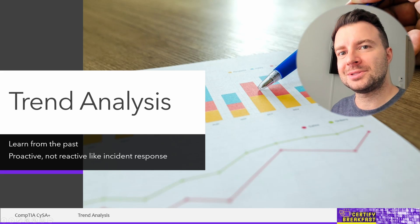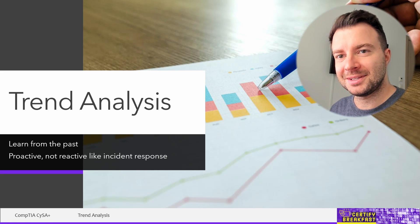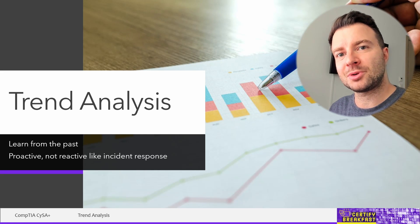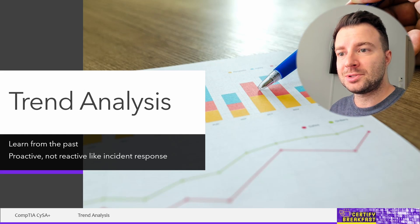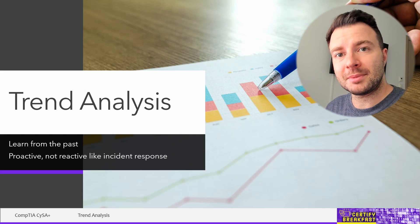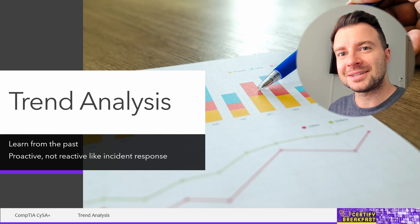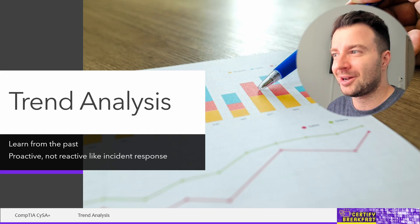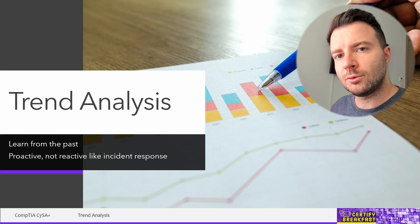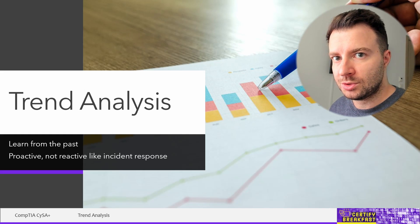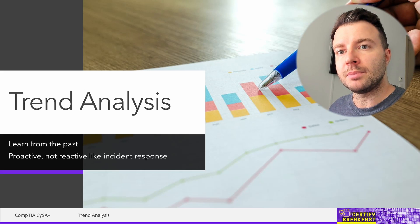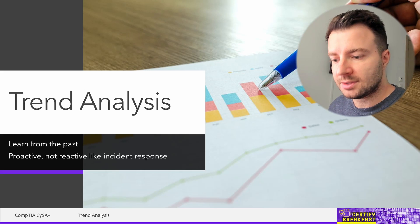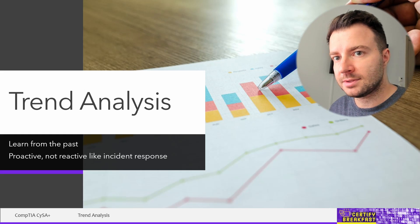Trend analysis is a way to look at the past, look at some information from the past, try to learn from it, and then try to infer, to deduce, to predict somehow the future. This is going to work much better with security and computer systems than it does with the lottery or the stock market. It's basically a way to be proactive and try to predict what might happen, which is completely different from being reactive. And being reactive is what we've seen when we implement incident response. So this is not incident response — this is trend analysis.